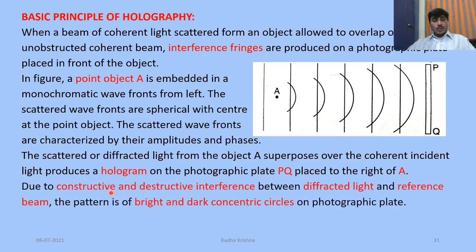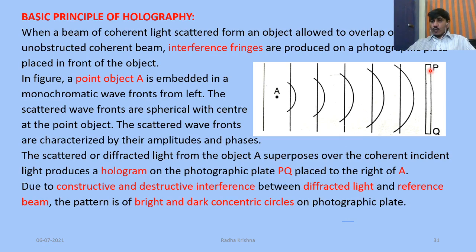Due to constructive and destructive interference between the diffracted light and reference beam, the pattern consists of bright and dark concentric circles on the photographic plate. In the PQ photographic plate, interference fringes are formed in the shape of concentric circles.